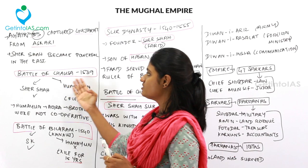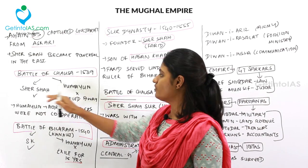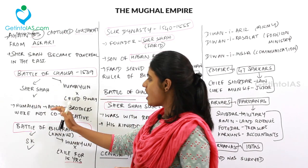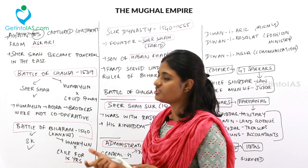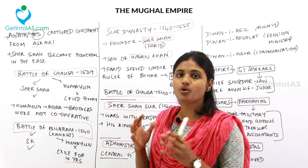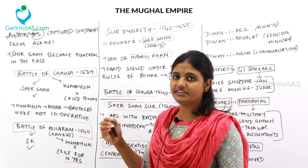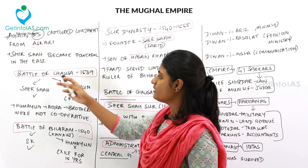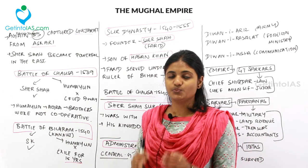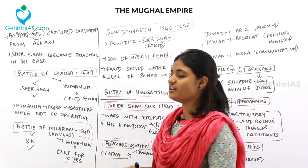The Battle of Chausa took place in 1539 between Sher Shah and Humayun; Sher Shah won and Humayun fled. Humayun went to Agra to negotiate with his brothers to fight Sher Shah, but they refused to cooperate. Then the Battle of Bilgram (Battle of Kannauj) took place in 1540, in which Sher Shah again defeated Humayun, who went into exile for 15 years.